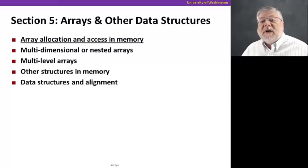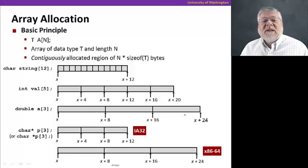So to outline this section, we're going to start off on arrays and how we access them in memory, the various elements of the arrays, and then we'll talk about multidimensional arrays as well as multilevel arrays and the differences between the two. Then we'll move on to talk about other kinds of data structures in memory and how they're aligned to the appropriate addresses to optimize memory access. Let's get started.